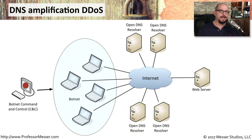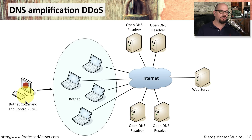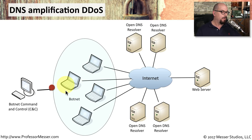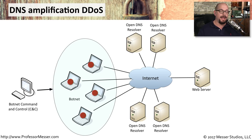A distributed denial of service attack usually starts with someone in command — the botnet command and control — the person in charge of the botnet. They send a message into the botnet, usually through some type of centralized messaging service. All the bots are listening for any commands to be run. When the commands come in, the botnets receive them and begin to act.